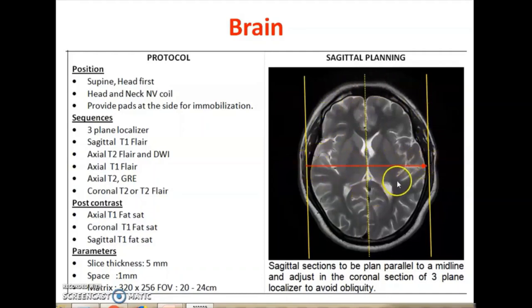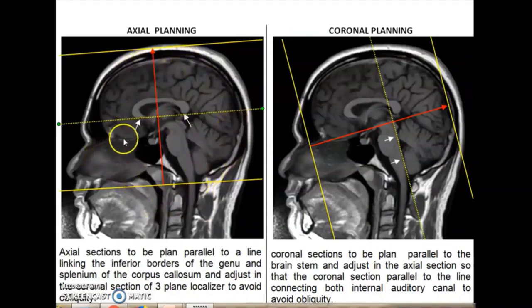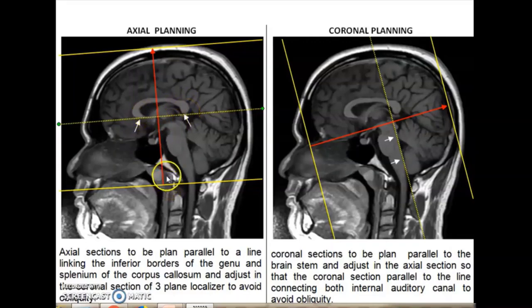Once you plan in the axial plane, you can check with the other two planes — coronal and sagittal — to avoid angulation errors. For the axial plane, you take a sagittal T1 plan and draw a line to touch the inferior border of the genu and the splenium of the corpus callosum. This axial plane must be parallel to that line, and it is covered from the base of the skull to the vertex.